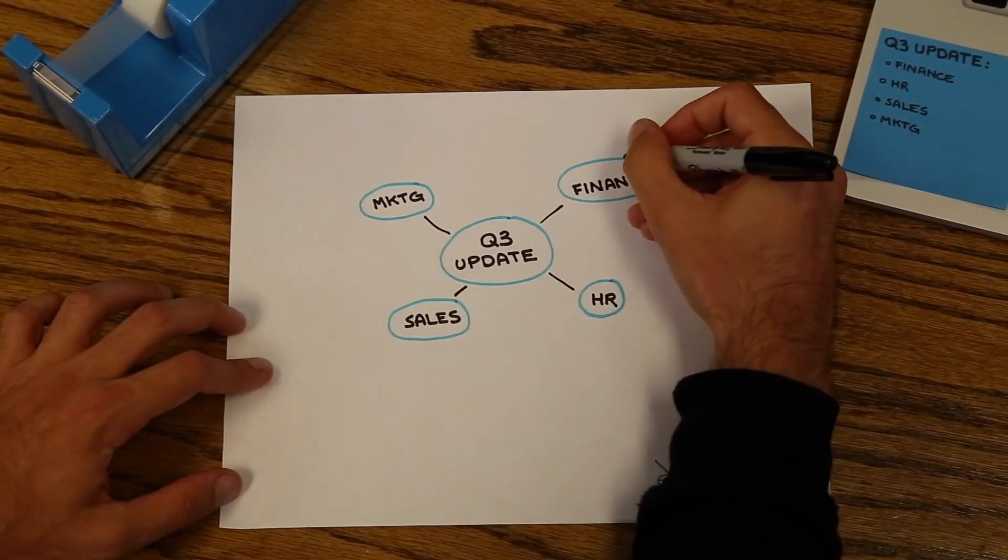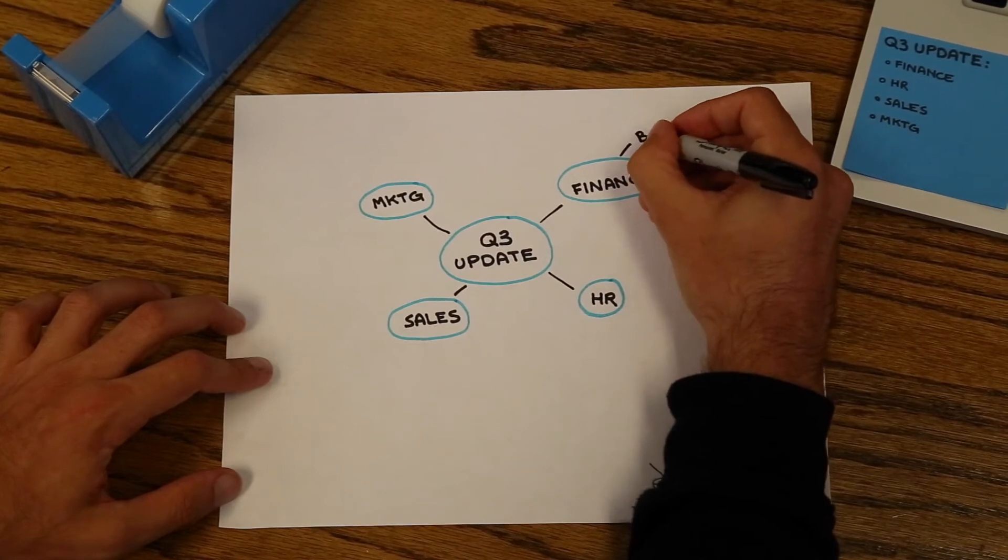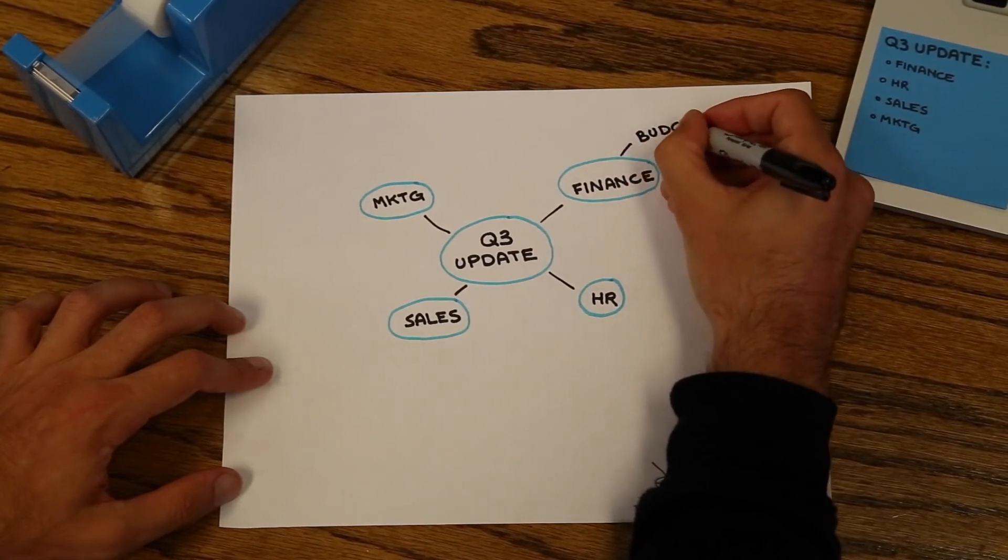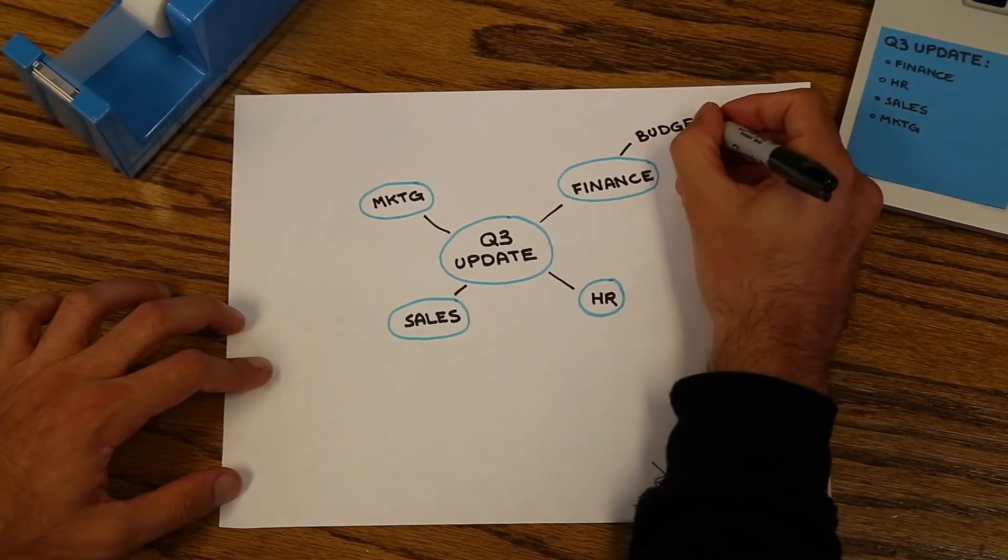Next, for each topic, add your supporting points. These will be your subtopics. In general, two to three are usually enough.